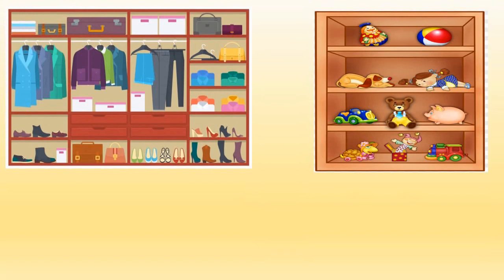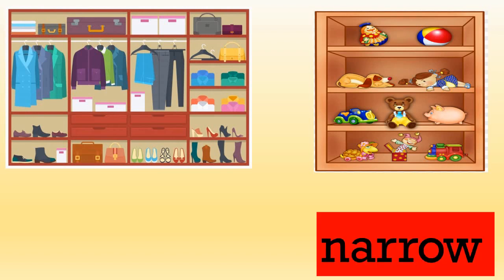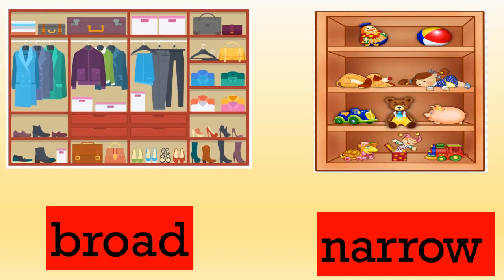Now student, in this example we have two cupboards. In which cupboard do you see toys and where do you see the clothes? Yes, the toys are in the narrow cupboard and the clothes are in the broad cupboard. Very good.